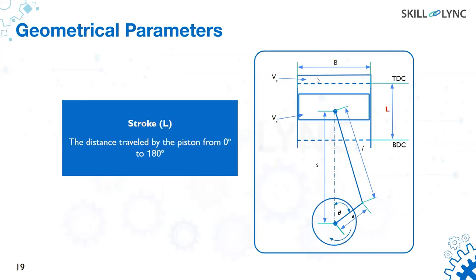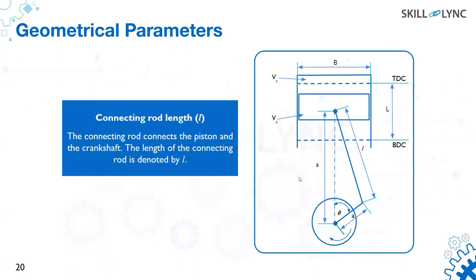The connecting rod length is the link connecting the piston and the crankshaft. TDC (top dead center) is when the piston is at the very top — corresponding to 0 or 360 degrees of crank angle. BDC (bottom dead center) is when the piston is at the very bottom, corresponding to 180 degrees.